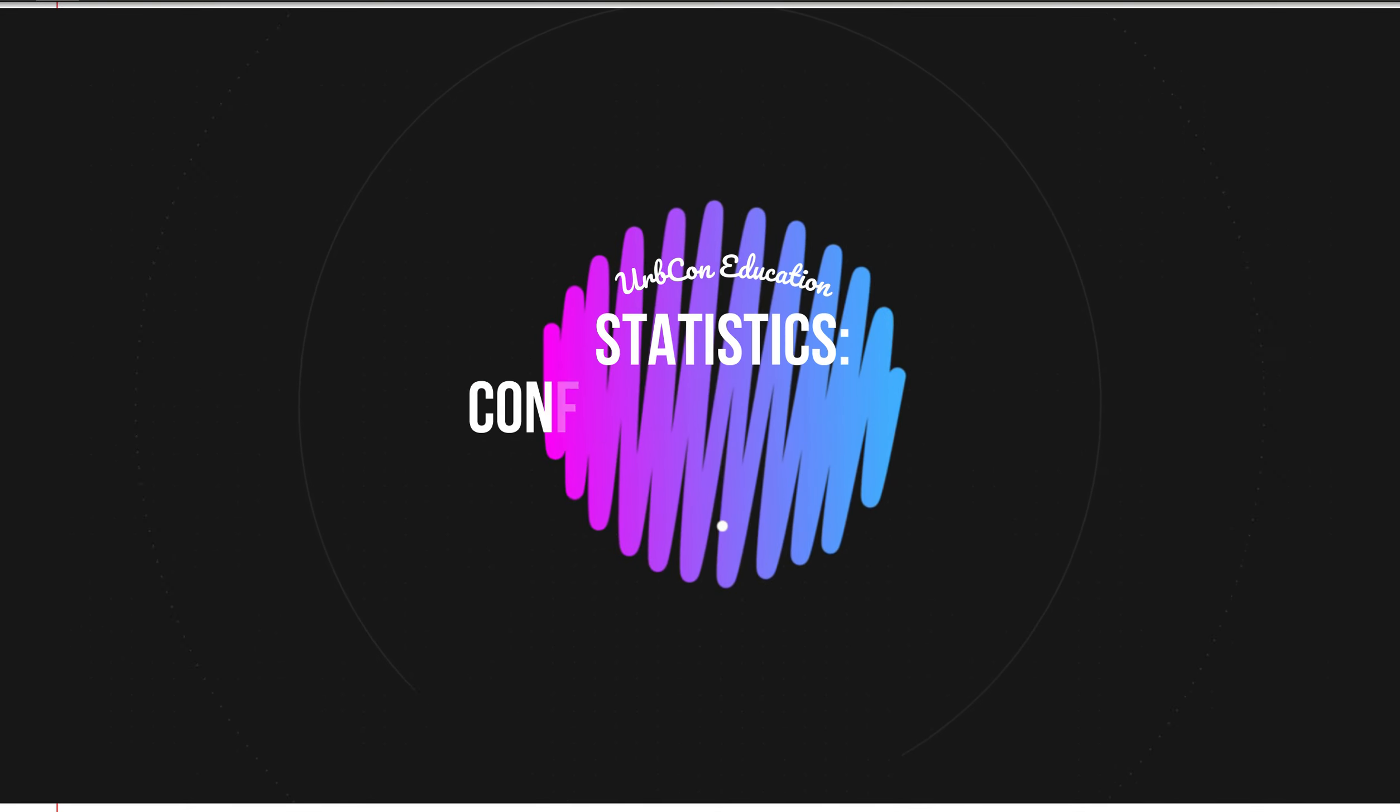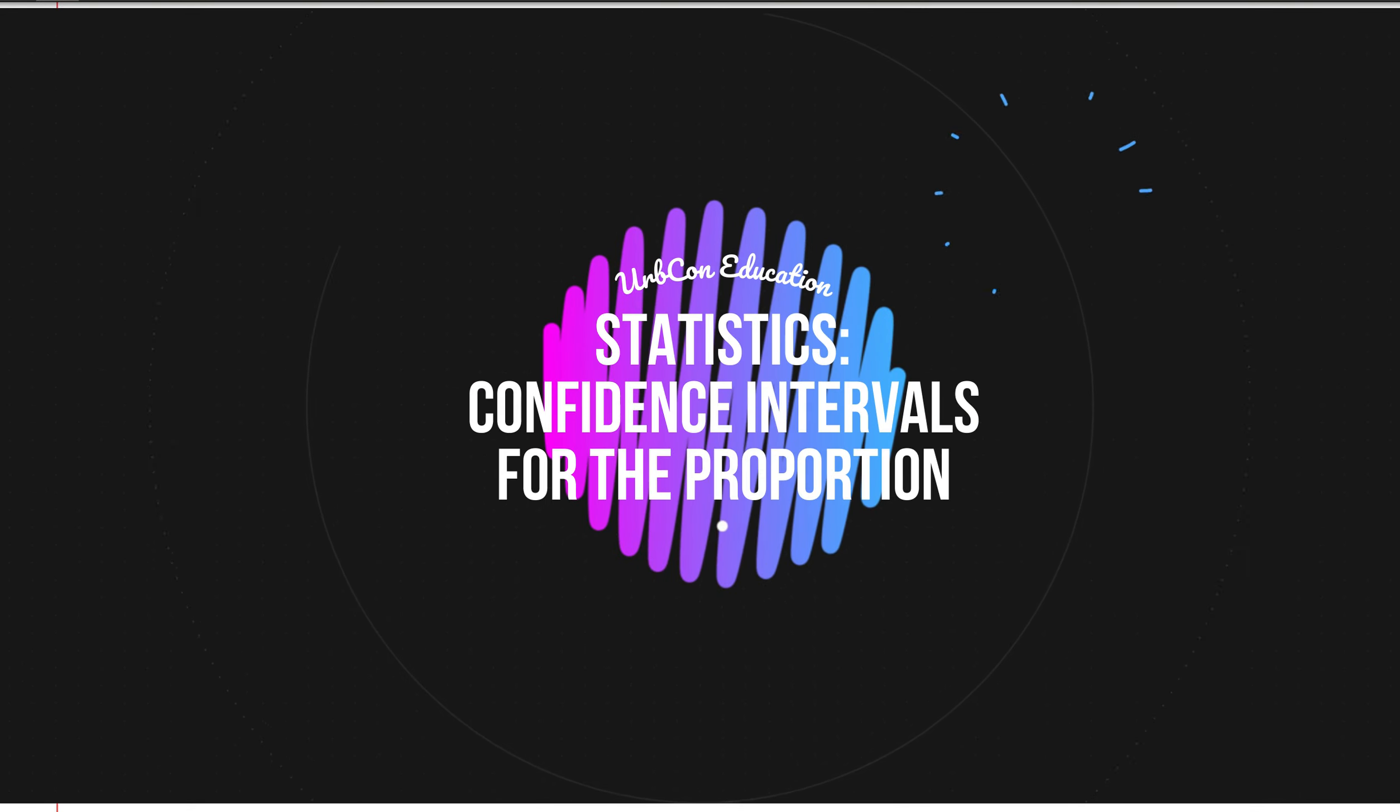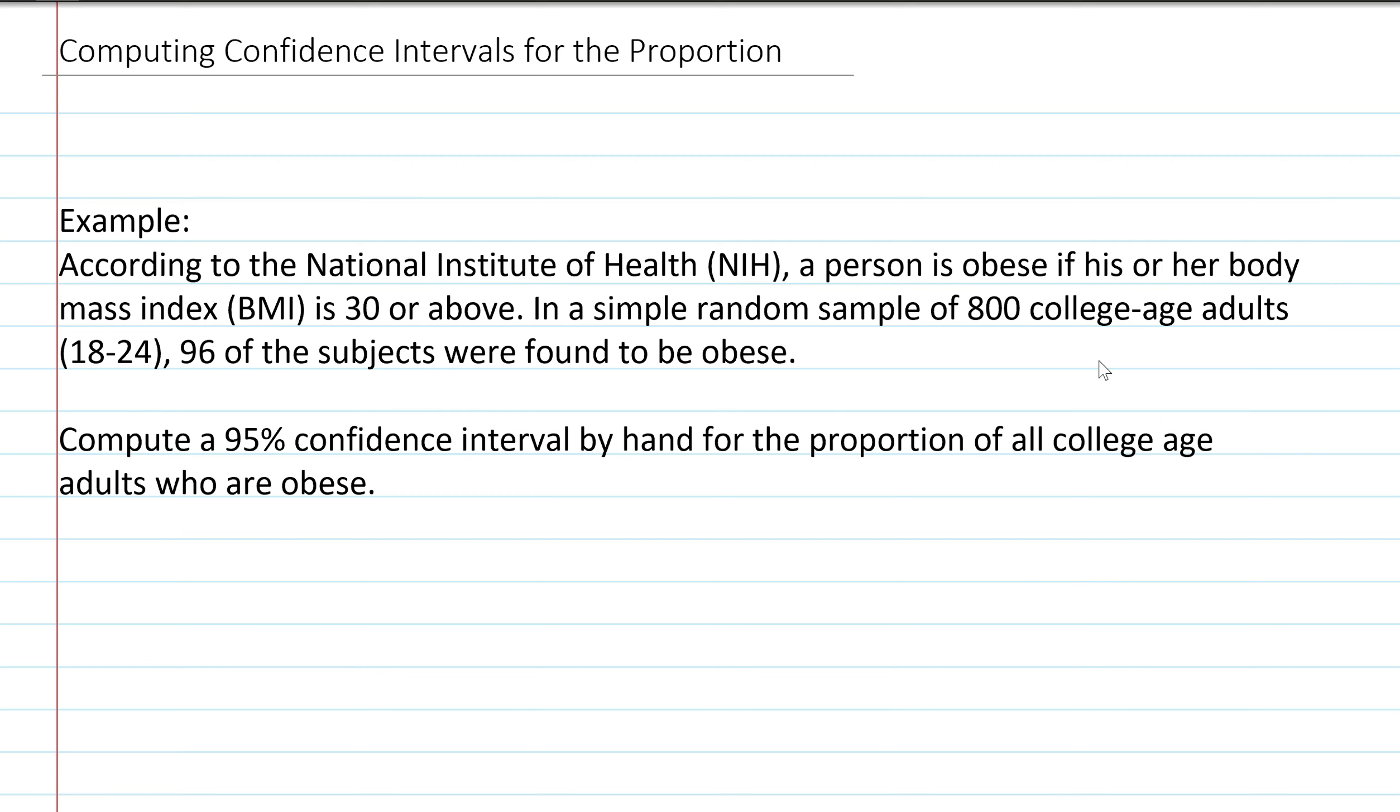Hey everyone. So we'll start off with our first example. We're looking at what says according to the NIH a person is obese if his or her body mass index BMI is 30 or above.